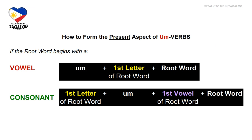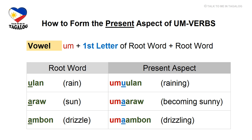And if the root word begins with a consonant, you need to insert 'um' after the first letter of the root word, then add the first vowel of the root word, and then the root word. It may sound like a lot, but I assure you it's not that hard. So the rule is: first letter of root word + um + first vowel of root word + root word.